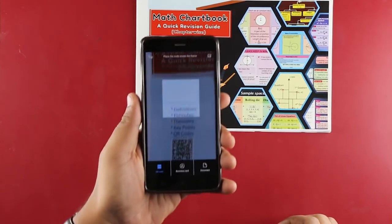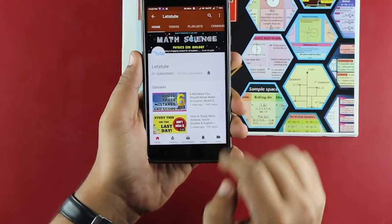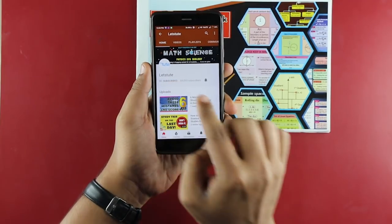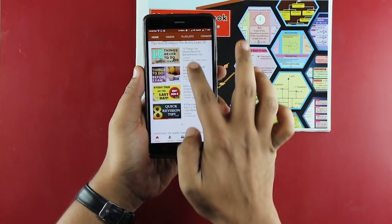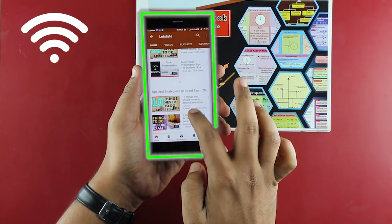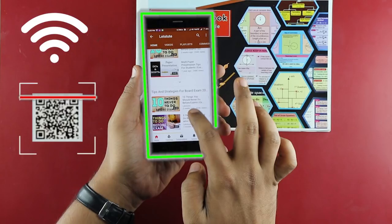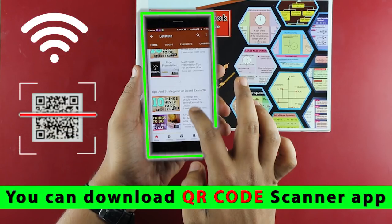The moment you scan this code, it will directly take you to our YouTube channel where you can watch our math videos for free. To use this, all you require is a smartphone with an internet connection and a QR code scanner, which you may download if it is not inbuilt.